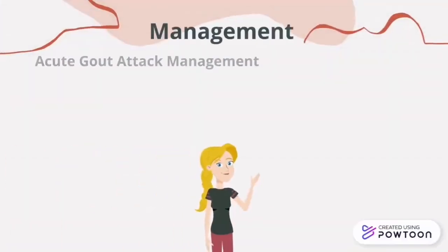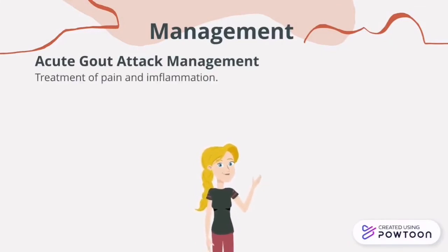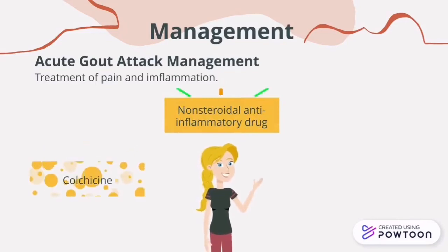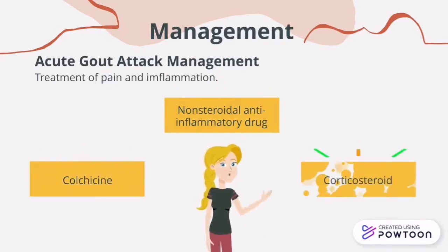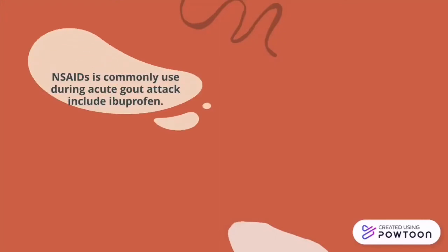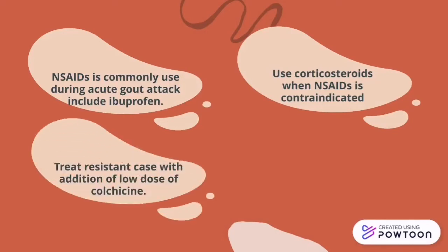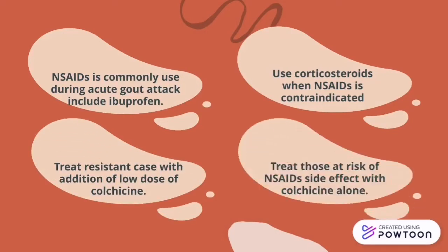For acute gout attack management, for the treatment of pain and inflammation, we use non-steroidal anti-inflammatory drugs, colchicine, or corticosteroids. Colchicine is commonly used during an acute gout attack. Use corticosteroids when colchicine is contraindicated. Treat resistant cases with the addition of low-dose colchicine, and treat those at risk of NSAID side effects with colchicine alone.